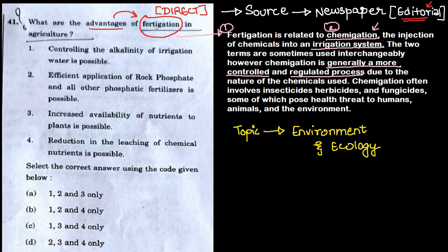Chemigation is generally a more controlled and regulated process because of the nature of chemicals used, involving insecticides, herbicides, and fungicides to protect humans, animals, and the environment. Now, option 1 — controlling alkalinity of irrigation — is correct. Option 2 — efficient application of rock phosphate — is not correct. Options 3 and 4 are correct. So the correct answer is C: statements 1, 3, and 4 are correct.